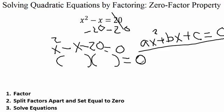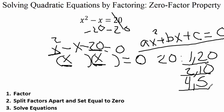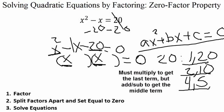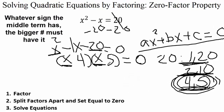Drawing parentheses set equal to zero, the first spots come from x squared: x times x. Then we look at the last term, 20, and list all possible factors: 1 times 20, 2 times 10, 4 times 5. We need the combination that adds or subtracts to get our middle coefficient of 1. The 4 and 5 work since 5 minus 4 equals 1. Whatever sign the middle term has, the bigger number takes that sign — so the negative goes with the 5.